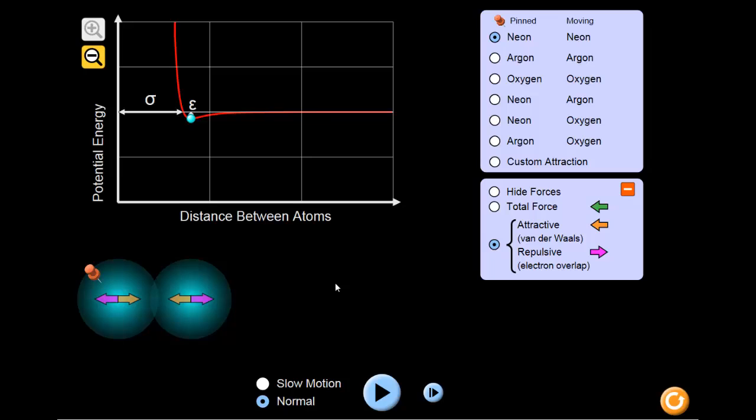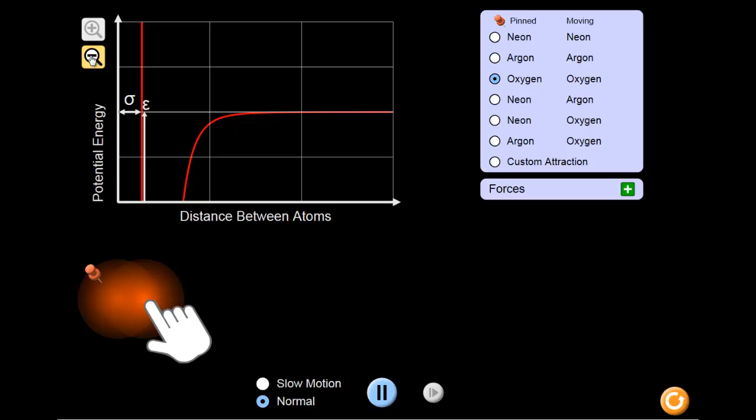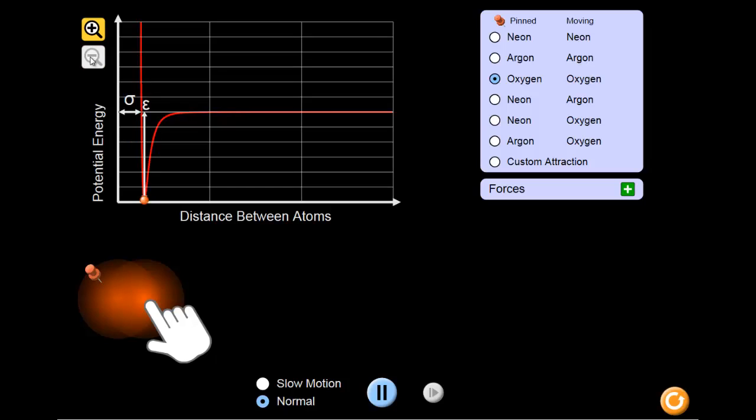Now that we've taken a look at two neon atoms, we'll take a look at two oxygen atoms. Since the oxygen graph actually exceeds the scale of the graph we had before, we'll zoom out on it so the whole picture can be seen.